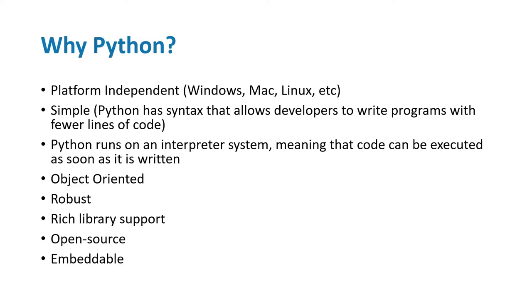In general terms, a person is called robust if they are physically or mentally strong and healthy. In programming language terms, it means it can handle unexpected terminations and exceptions. This concept of exception handling means whenever your software process is running and something unexpected occurs, your programming language needs to handle it - that's why we call Python a robust programming language.